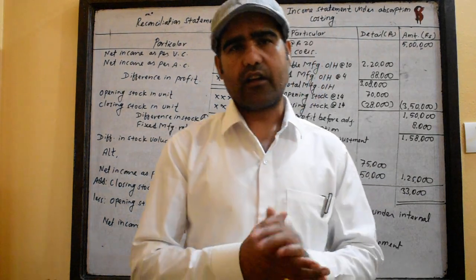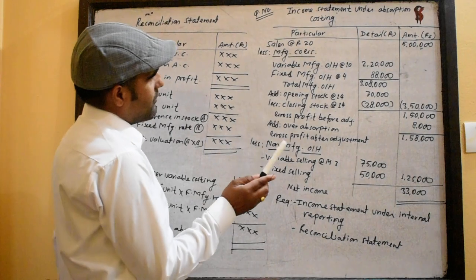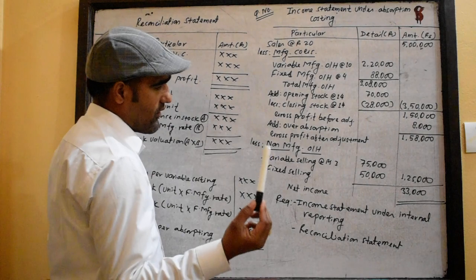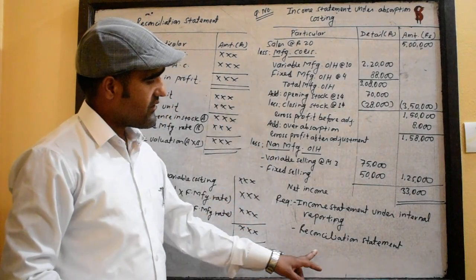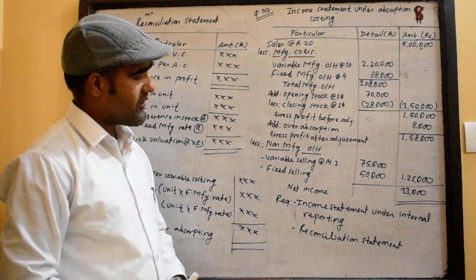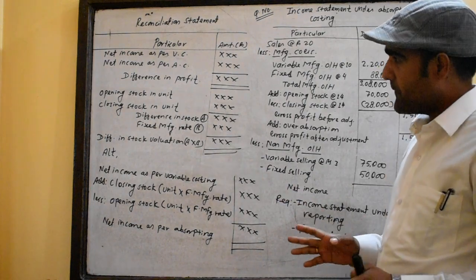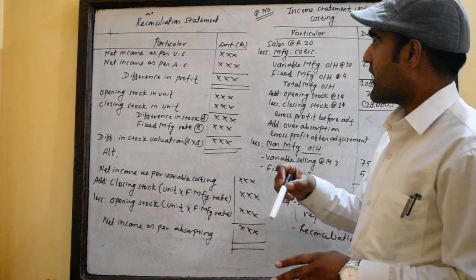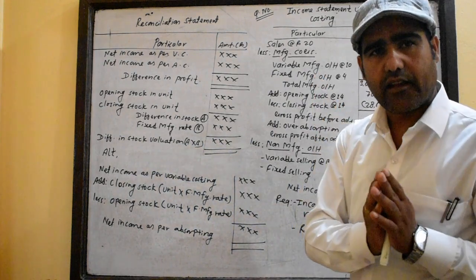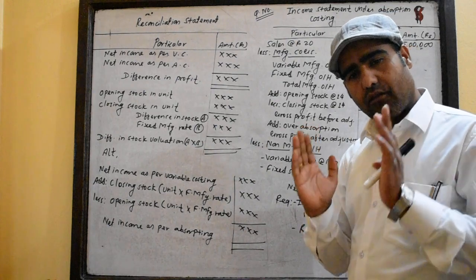This is the 4th part of the Reconciliation Statement. This is the 5th part of the Reconciliation program. If you are available, you can follow the income statement by this method — variable costing or absorption costing.